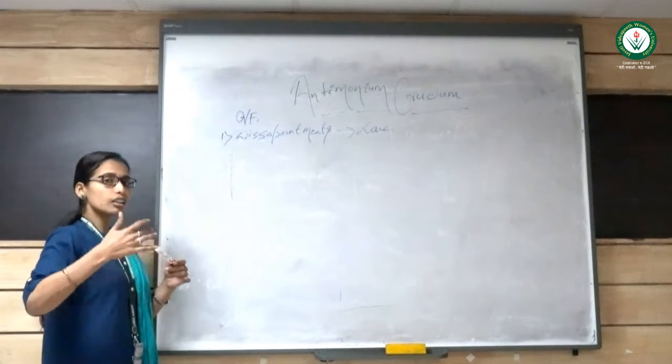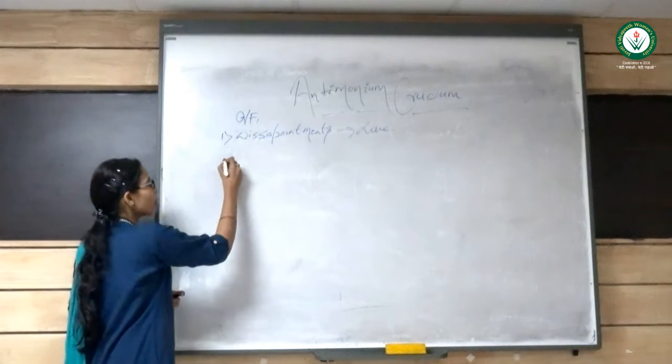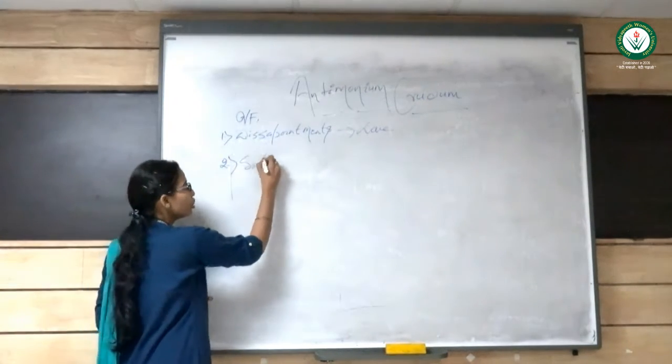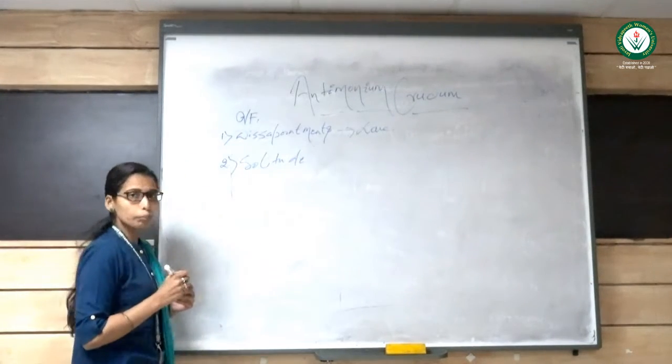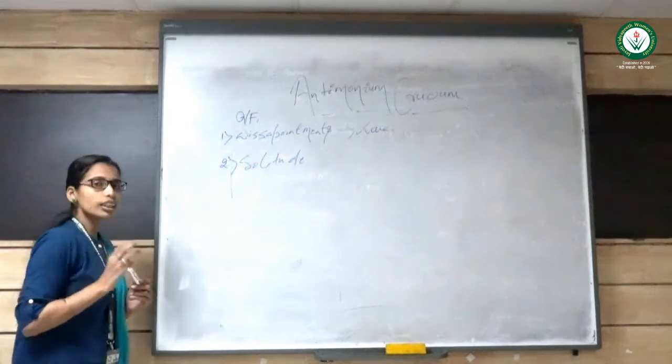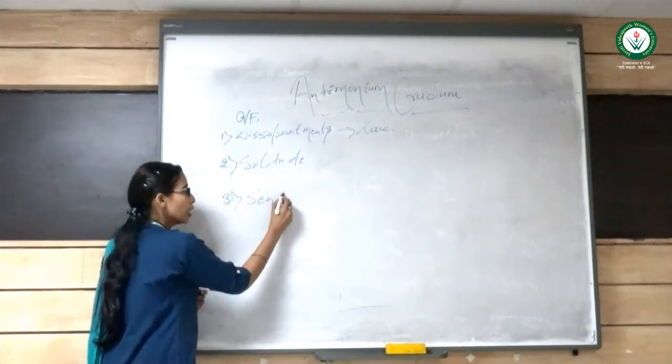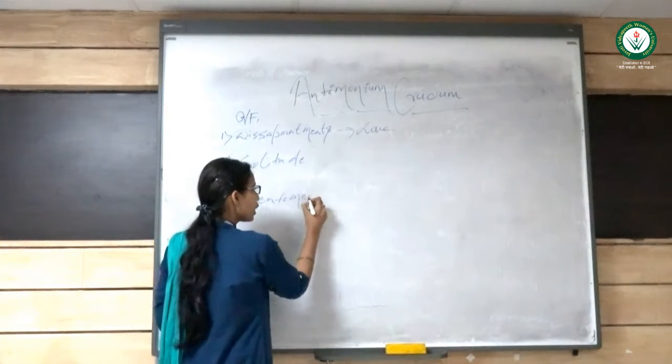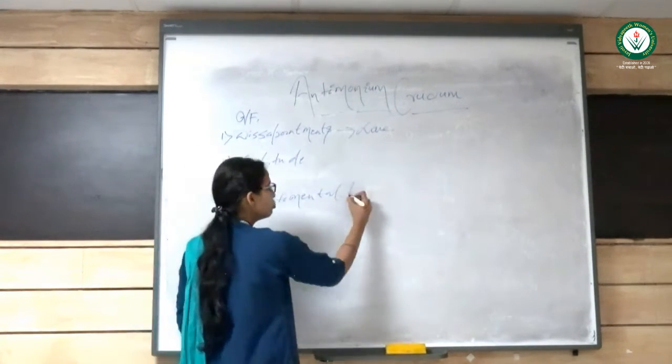Now how it evolves - the second thing we see as a part of it is desire for solitude. They do not prefer company. Rather, the third thing we see in these patients is getting sentimental. Antimonial prudence patients are highly sentimental, especially by the moonlight.